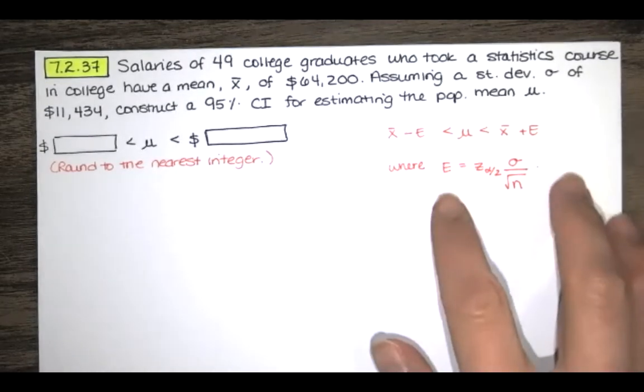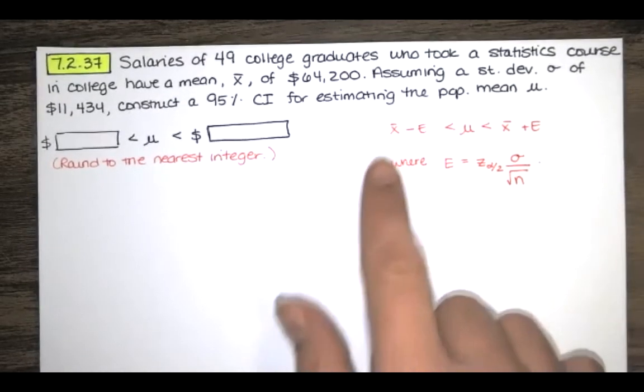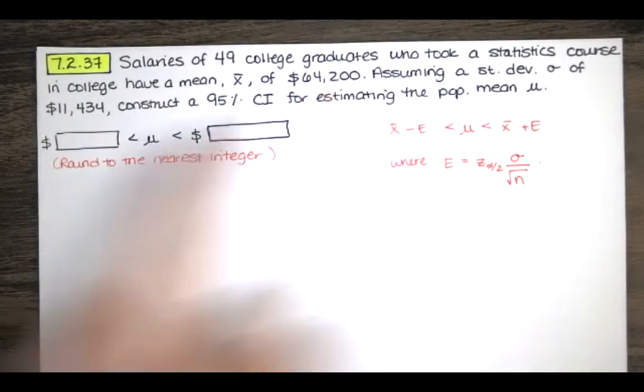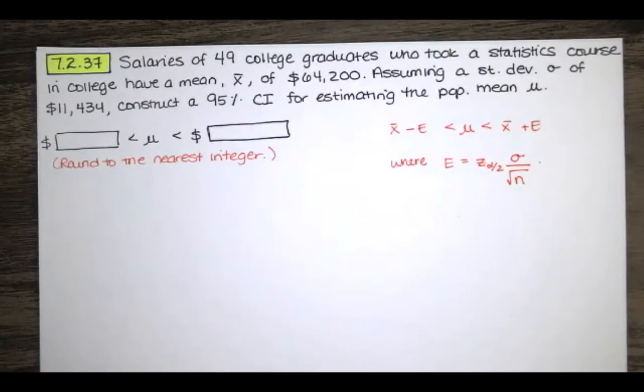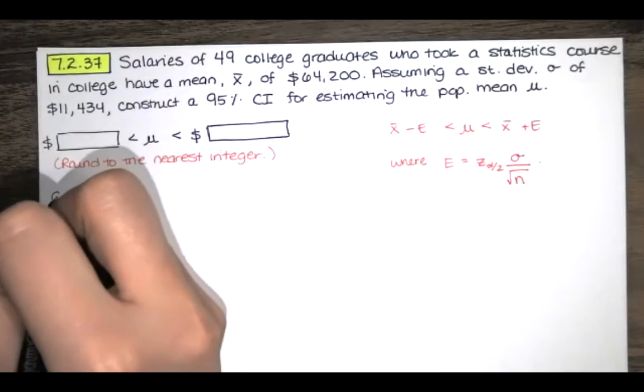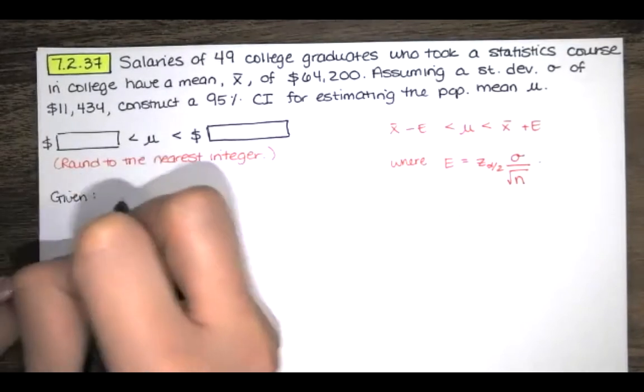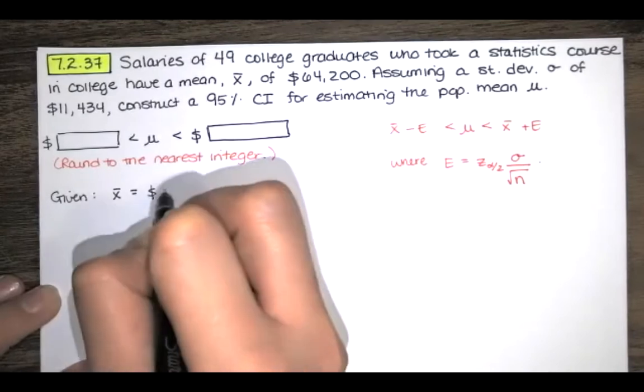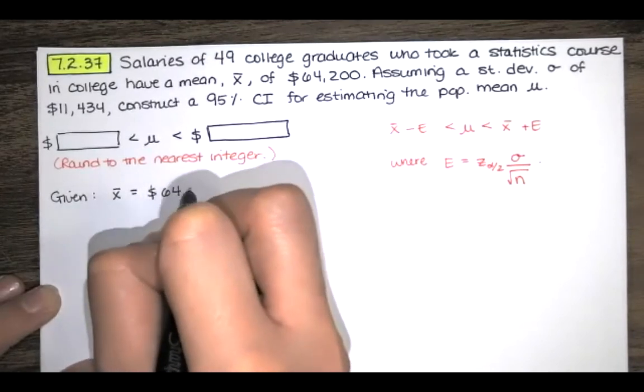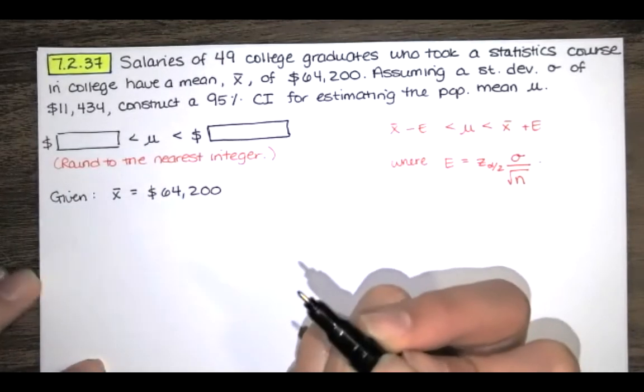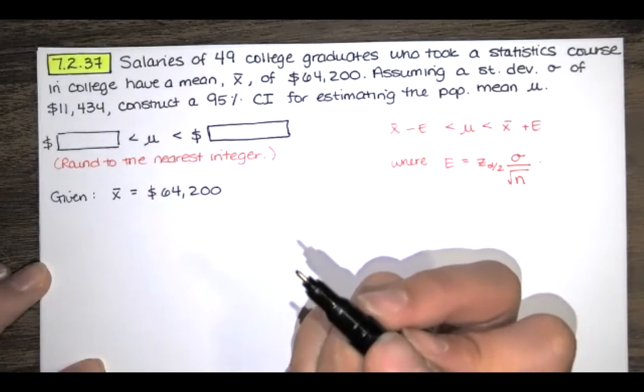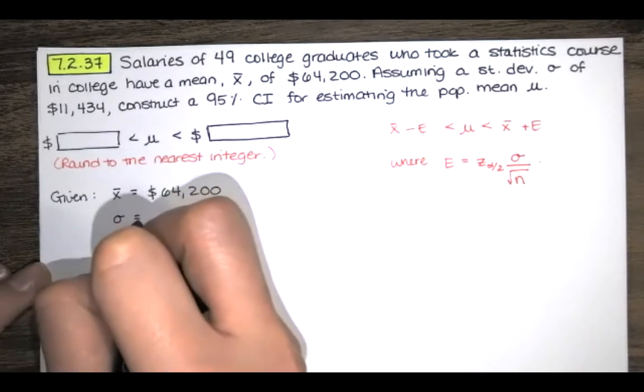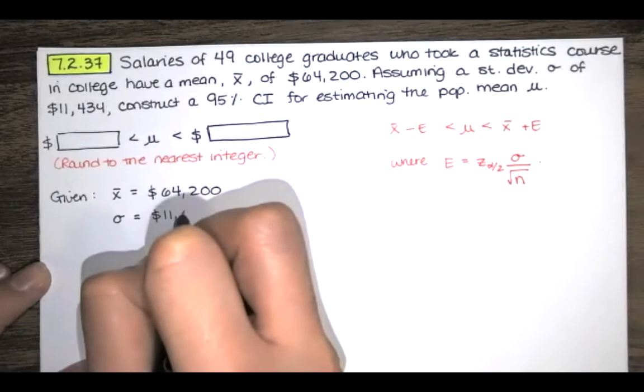So in order to use this, we need to know X bar and they actually gave that to us. So let's write down everything that was given. We're given that X bar, that mean salary for our sample is $64,200. We are given that the population standard deviation is $11,434.